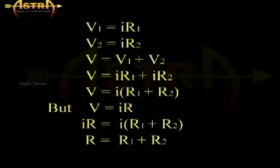We get the total potential difference V equals IR1 plus IR2 that equals I into R1 plus R2.